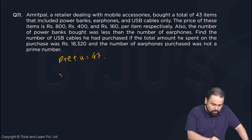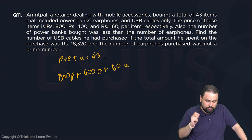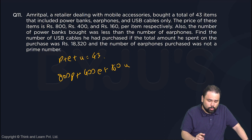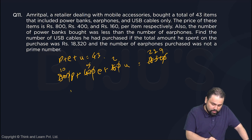The prices are given, so 800P plus 400E plus 160U. Looking at the total amount spent, 18,320, I can simplify by dividing out common factors. Working through the division: 8 will go, 10 will go, 5 will go, 2 will go. This gives me 10P plus 5E plus 2U equals 229.